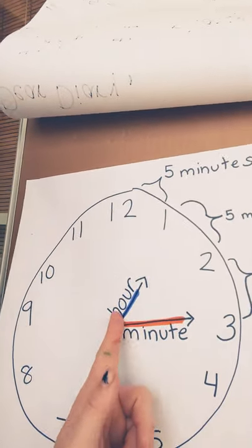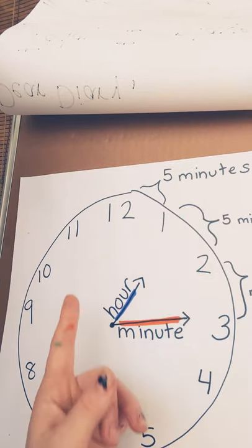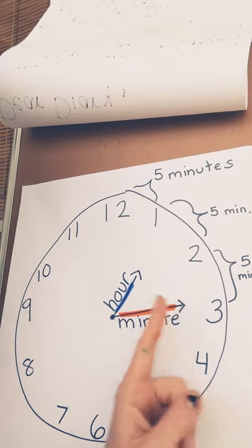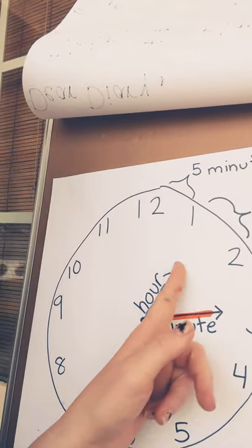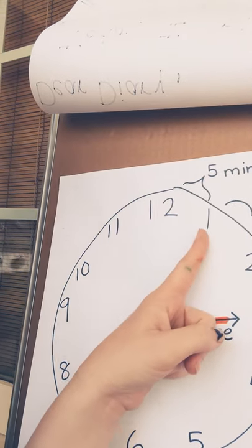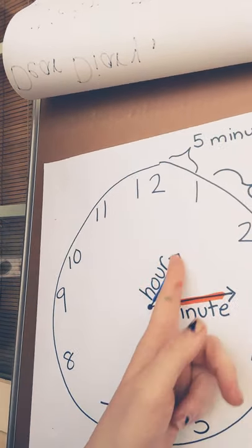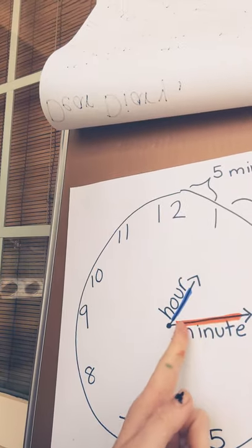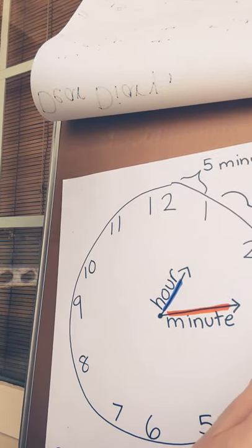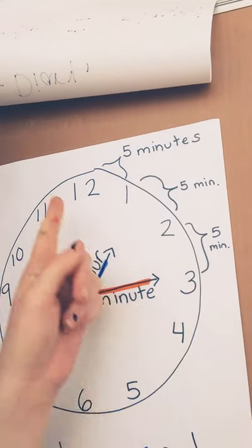So the time that this clock is showing right now that I've drawn is 1:15. Because when we're counting time, we look at the hour hand, where is it pointing to? And we look at the minute hand, where is it pointing to? The hour hand is in between the 1 and the 2, always goes to the smaller number. So we know that the hour is going to be 1.